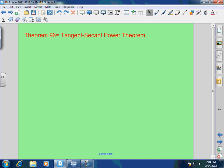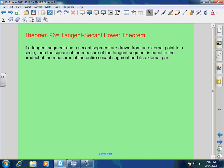Next, Tangent-Secant Power Theorem. Again, we're not talking about the tangent-secant angle, which is half of its intercepted arc. This time we're talking about distances again, length. If a tangent segment and a secant segment are drawn from an external point to a circle, then the square of the measure of the tangent segment is equal to the product of the measures of the entire secant segment and its external part.